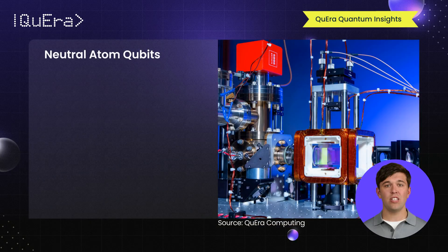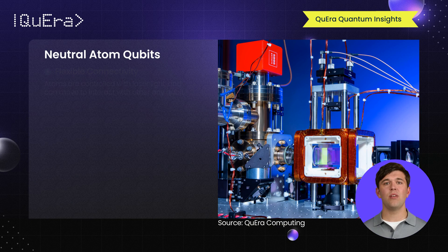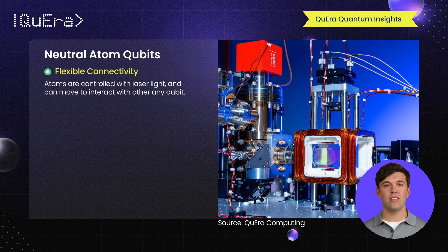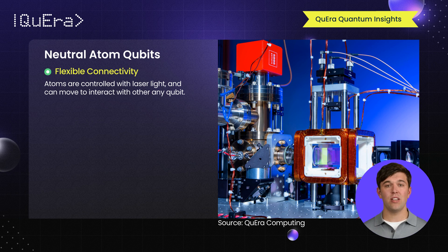Neutral atom quantum computing uses neutral atoms as qubits, manipulated with laser light. Unlike modalities where qubits are static and can interact only with their neighbors, neutral atoms can be moved during the computation process, making algorithms more efficient and enabling new ways of error correction.